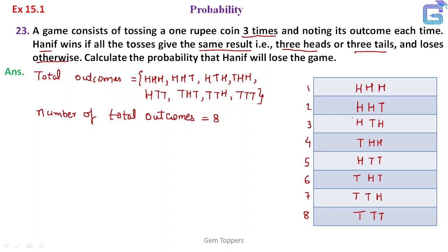Now, when will he win? It is given: when all the tosses give the same result. The same result appears in the first and last outcome — when all three are heads or all three are tails. So the winning outcomes are HHH or TTT.